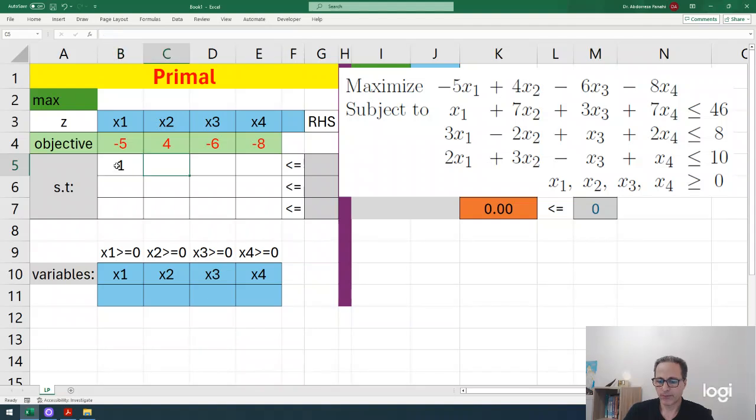Now for the constraints. First constraint: 1, 7, 3, 7 with RHS 46. Second constraint: 3, minus 2, 1, 2 with RHS 8. If I don't have a variable in a row, I write 0. Finally, the last constraint: 2, 3, minus 1, 1 with RHS 10. We're done importing the data.